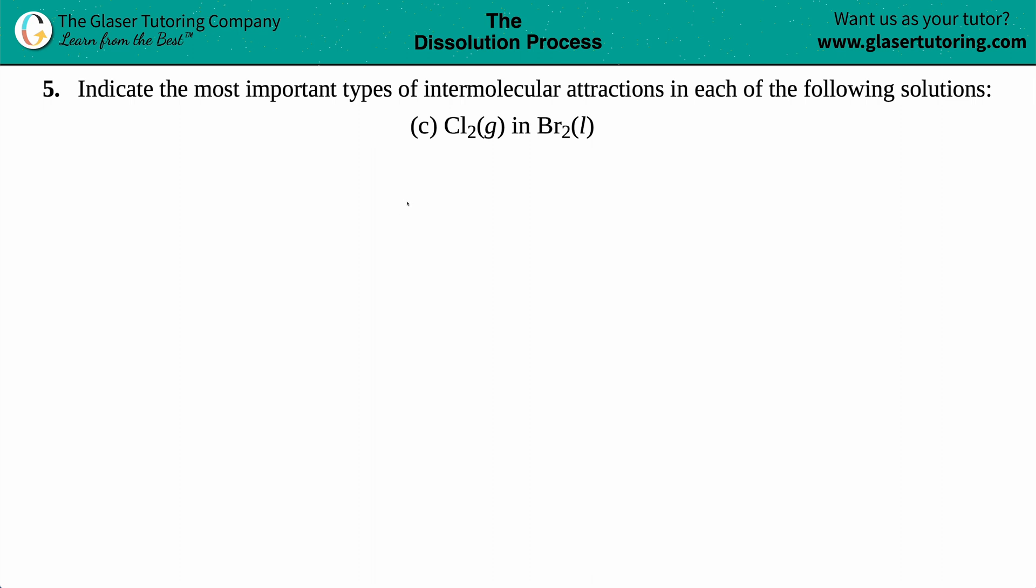Number five: indicate the most important types of intermolecular attractions in each of the following solutions. Letter C: we have Cl2 in Br2, Cl2 gas in Br2 liquid. Let's find out the most important type of intermolecular attraction.